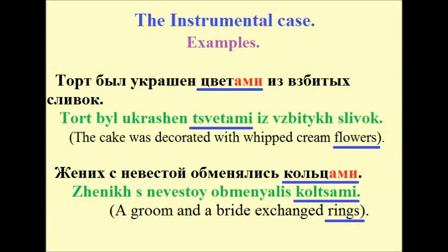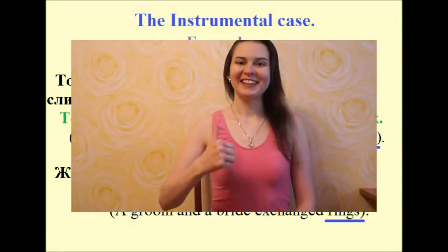Example sentences: Торт был украшен цветами из взбитых сливок — The cake was decorated with whipped cream flowers. Жених с невестой обменялись кольцами — The bride and groom exchanged rings.